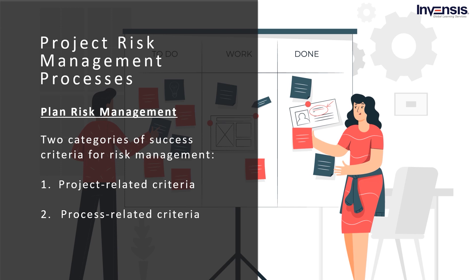Next, we have process-related criteria. We have already discussed several factors that measure success in project risk management. For example, the project risk management process for a research project needs to address more unforeseen changes than a project with a more predictable environment. Therefore, a research project risk management process may be considered a success even if it results in more variance from the baseline than would be allowable for a more predictable project.